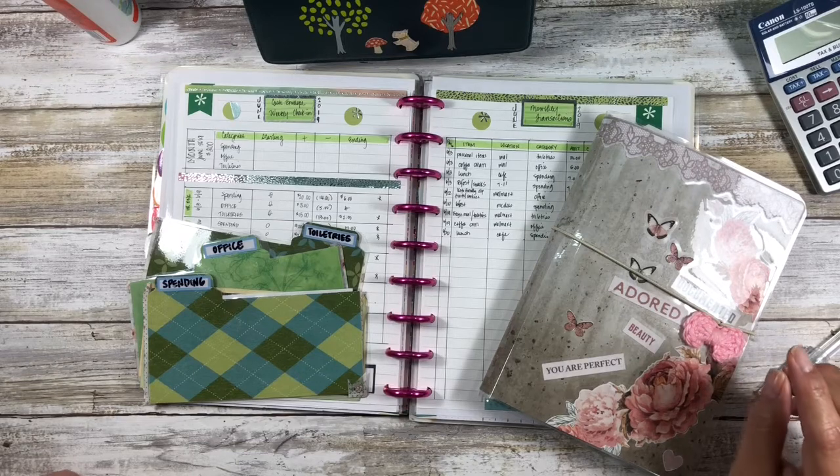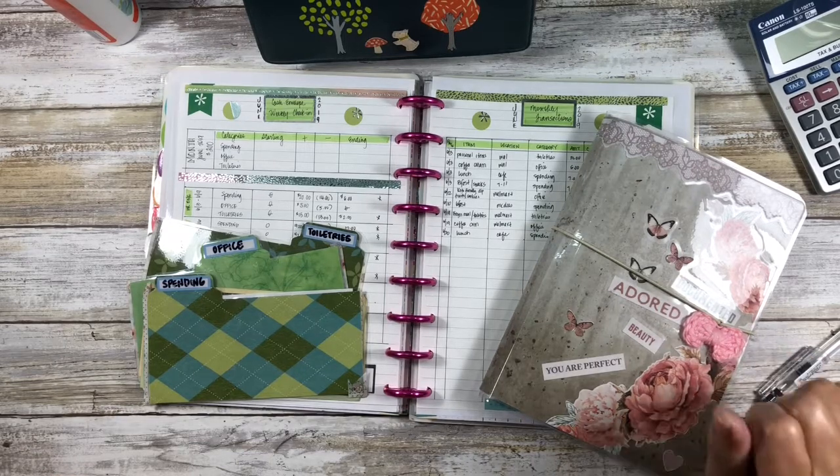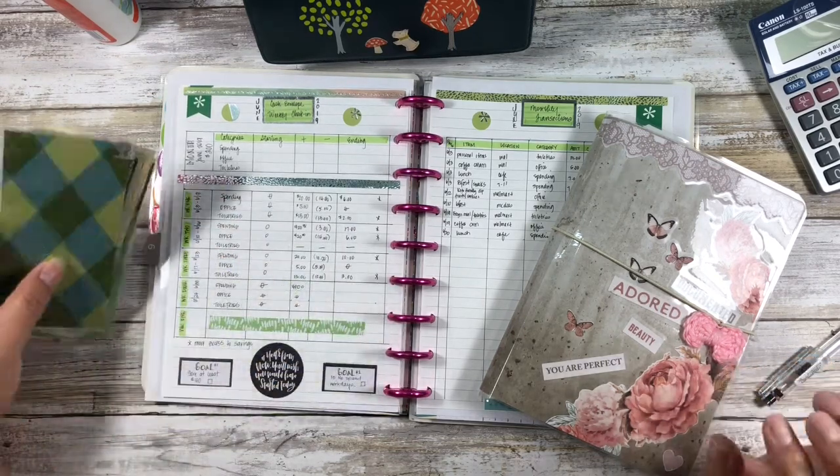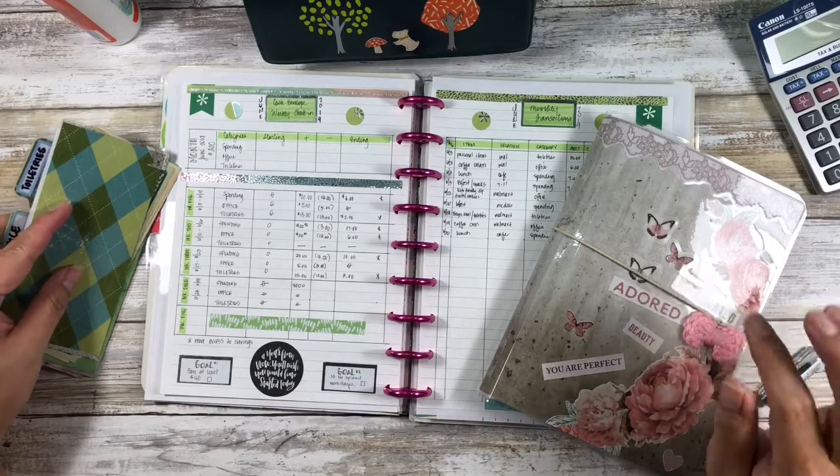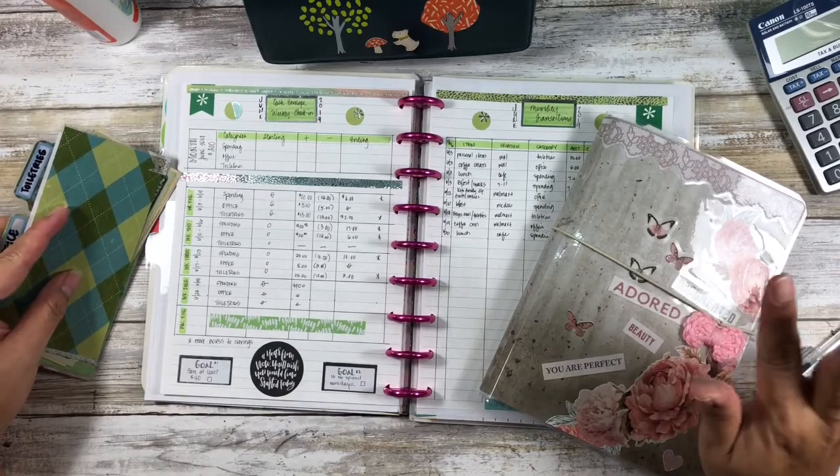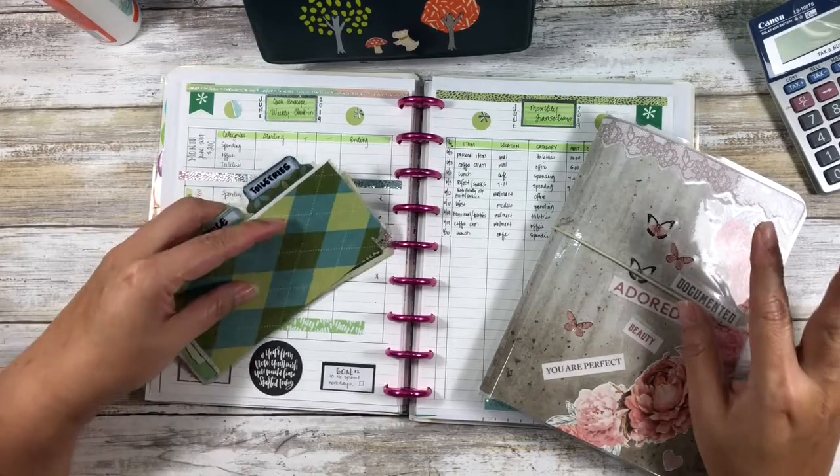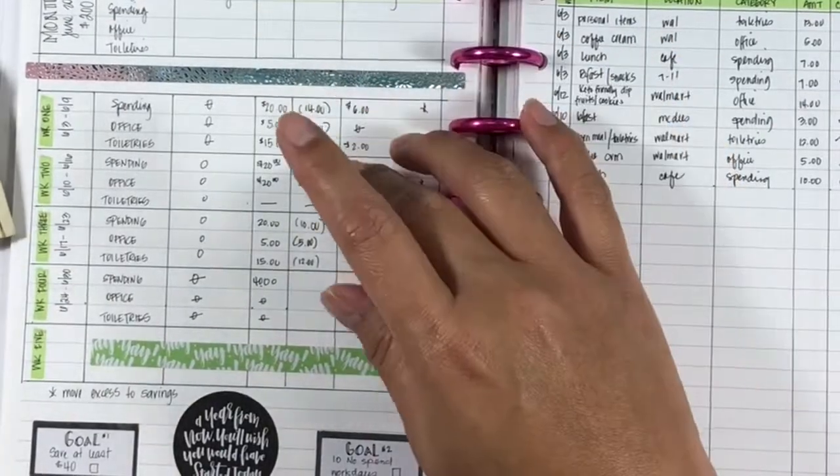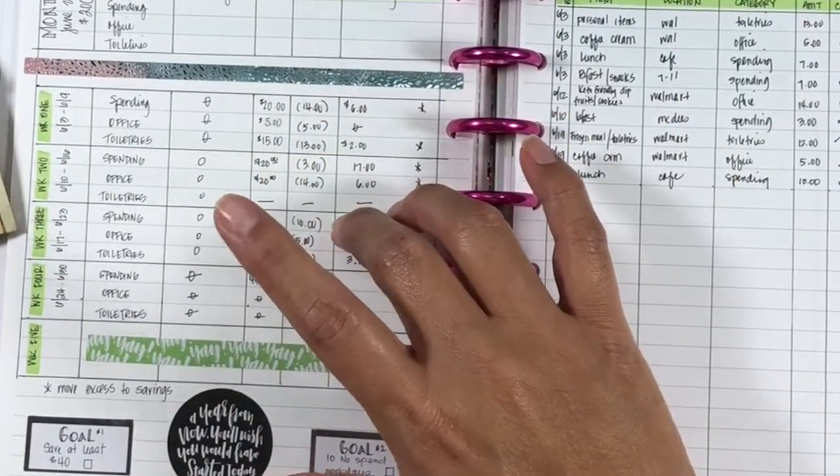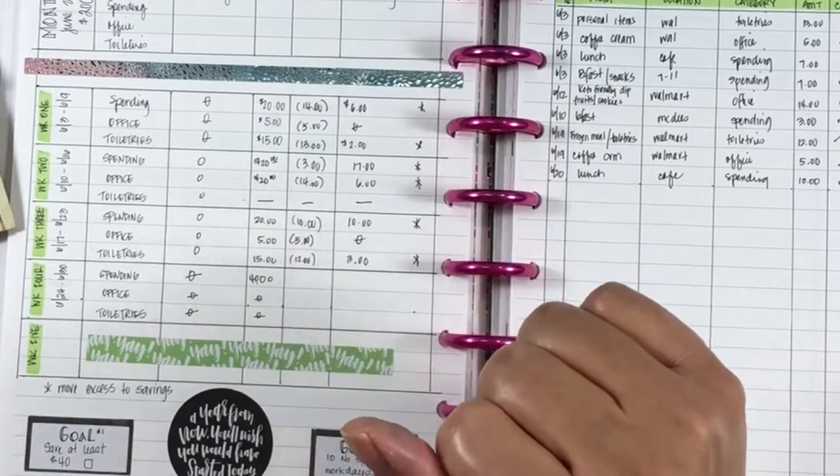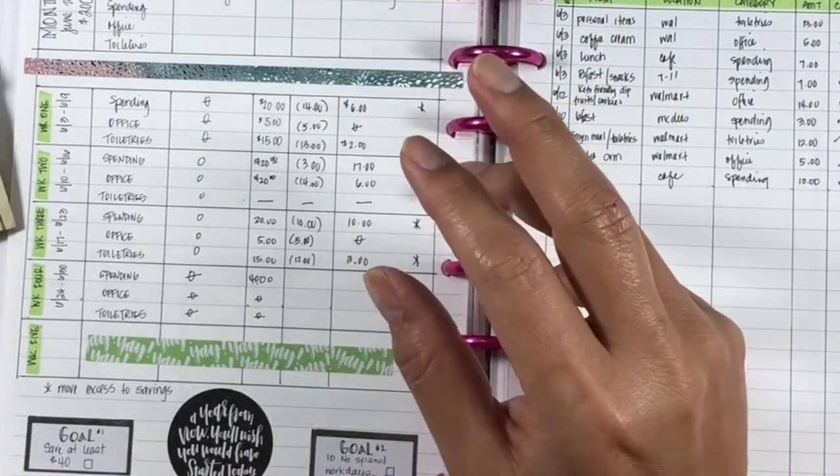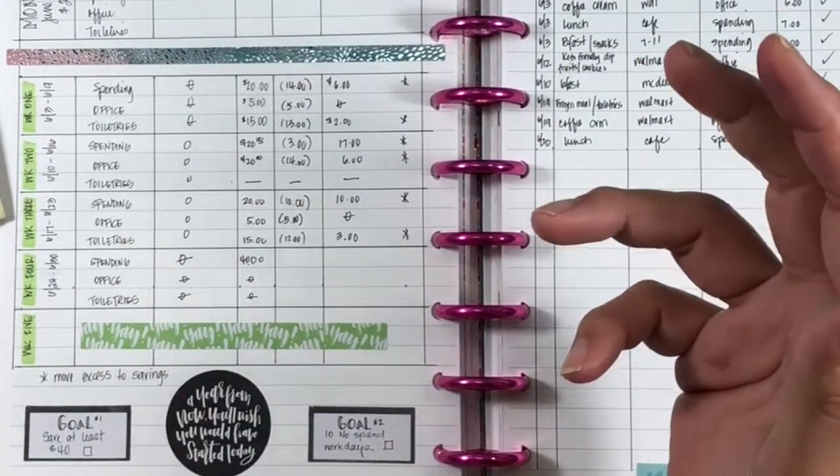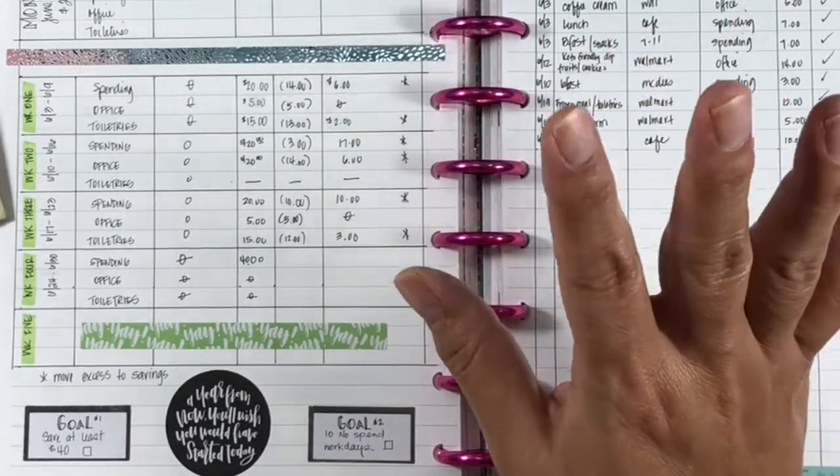So we are finishing and closing out the month of June in our cash envelopes. I've said this before, but I think this time around we'll actually do it - I believe this is going to be a short video. Last week I mentioned that I put everything in spending because I didn't really think I needed an office or toiletries category. I had talked about a $40 savings goal, and then some things came up and I had to use the money that I had saved.